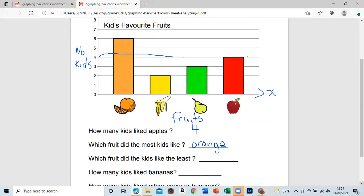Careful with the language now. Which fruit did the kids like the least? What is the least? The remaining one, we like to say the least. So that would be the smallest bar, and that would be banana.